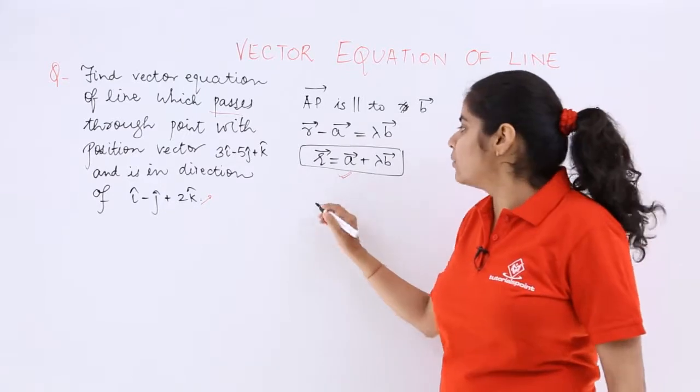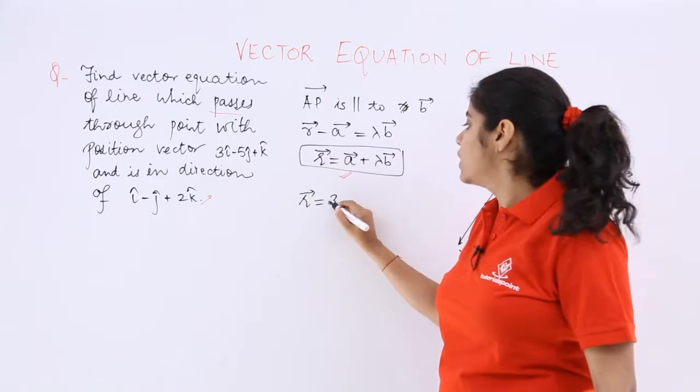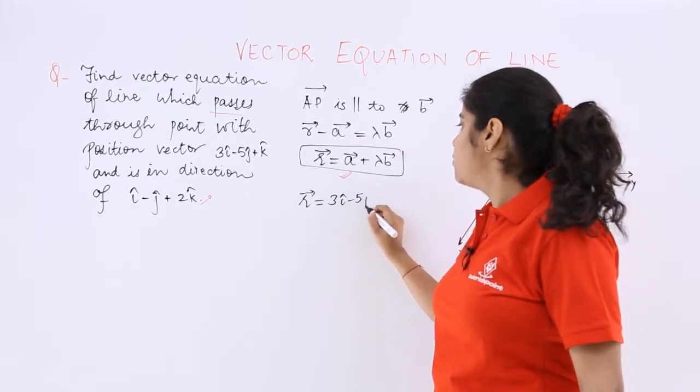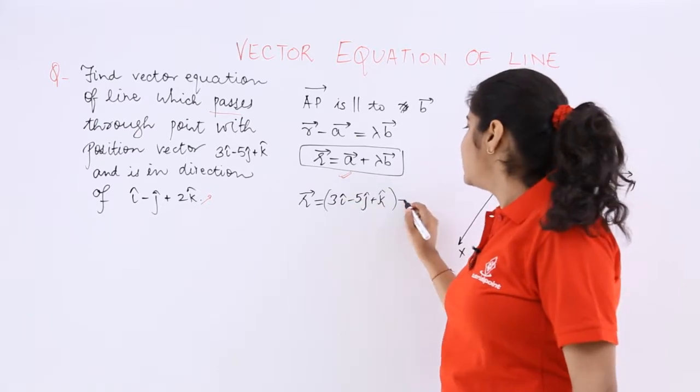Now definitely you can find out the answer. So the answer would be r equals a, which is 3i cap minus 5j cap plus k cap plus lambda b.